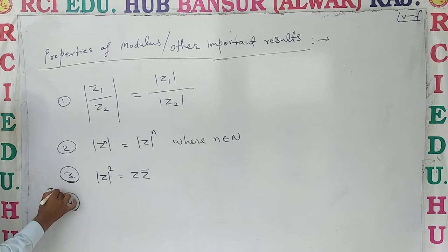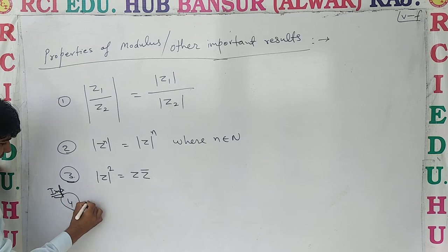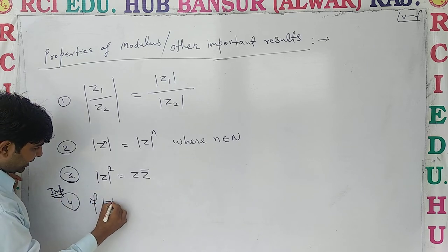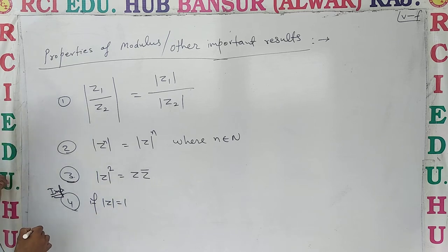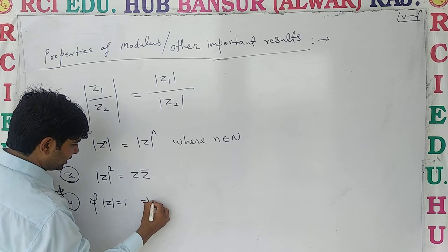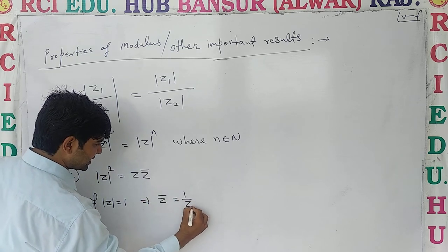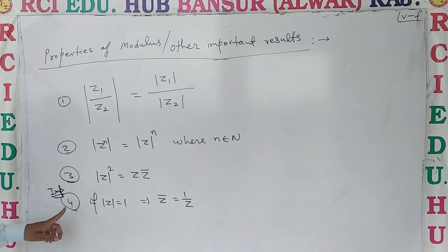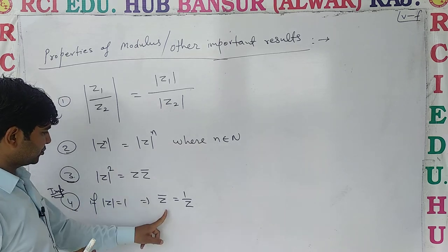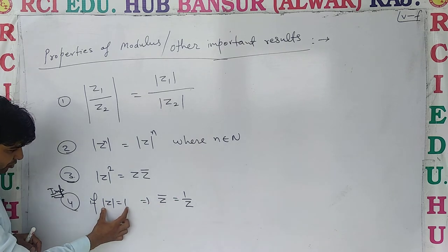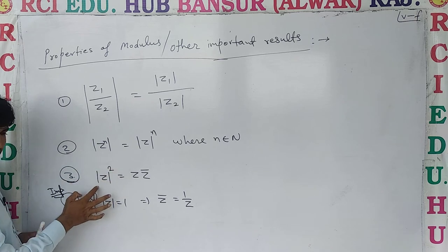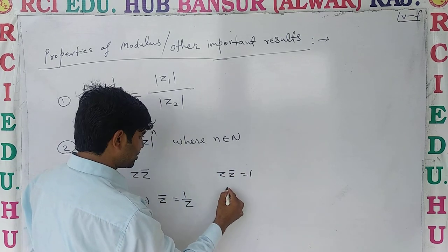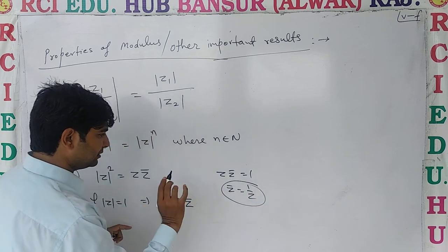चौथा, यह बहुत ही Important है: If Mod Z equal to 1, तो Z̄ equal to 1 upon Z होगा। यह आया कैसे? देखो, Z·Z̄ = |Z|² = 1, तो Z·Z̄ equal to 1, इसलिए Z̄ equal to 1 upon Z होगा। क्लियर है?